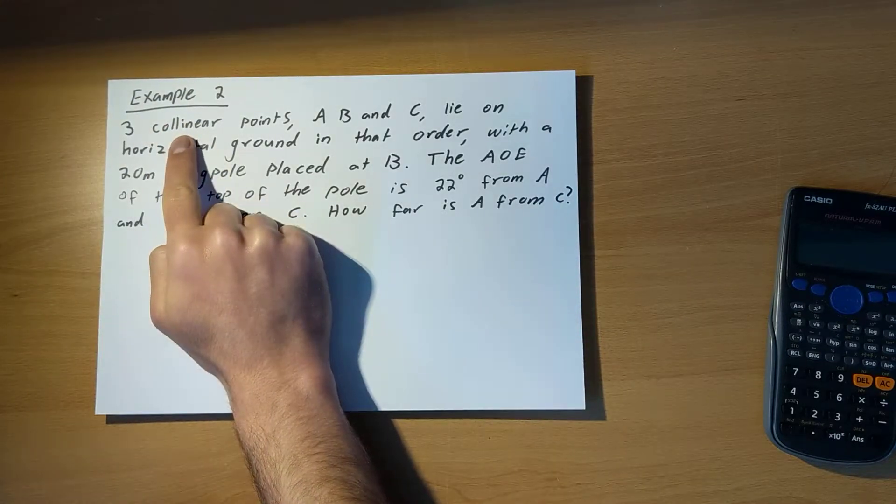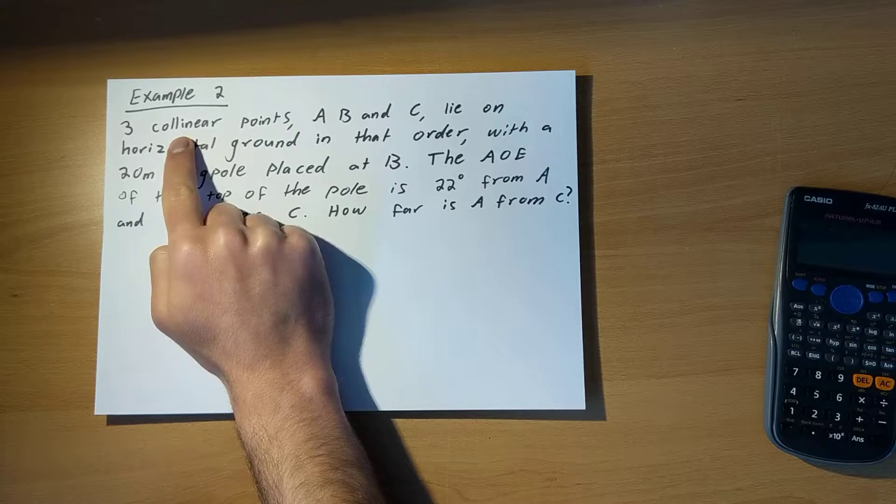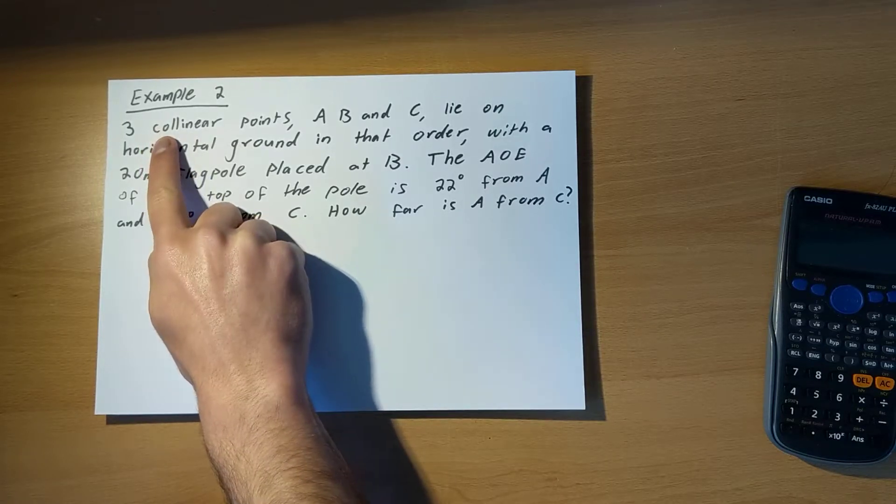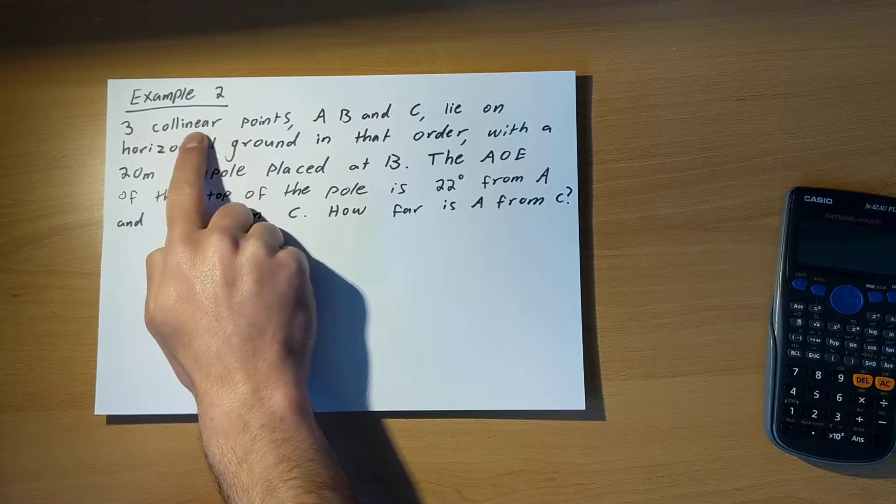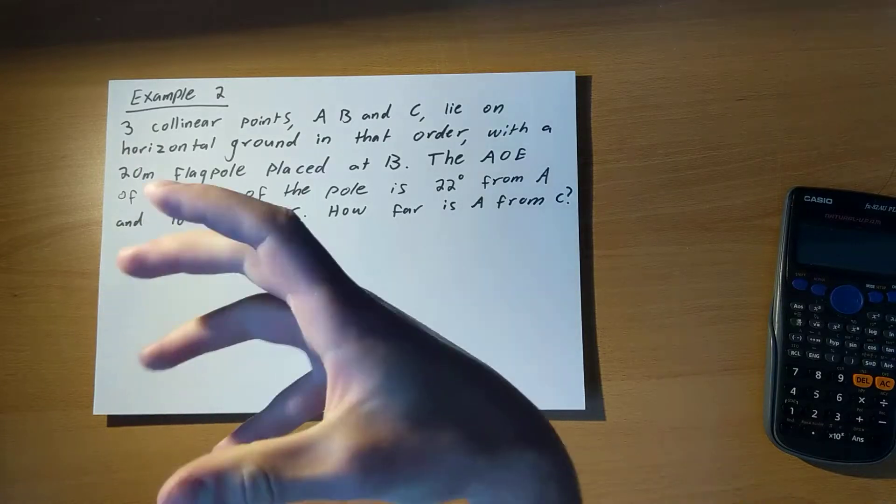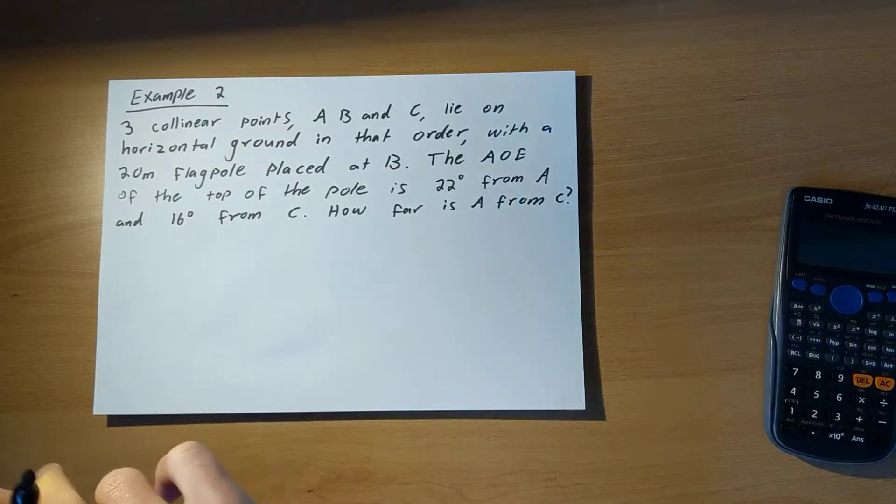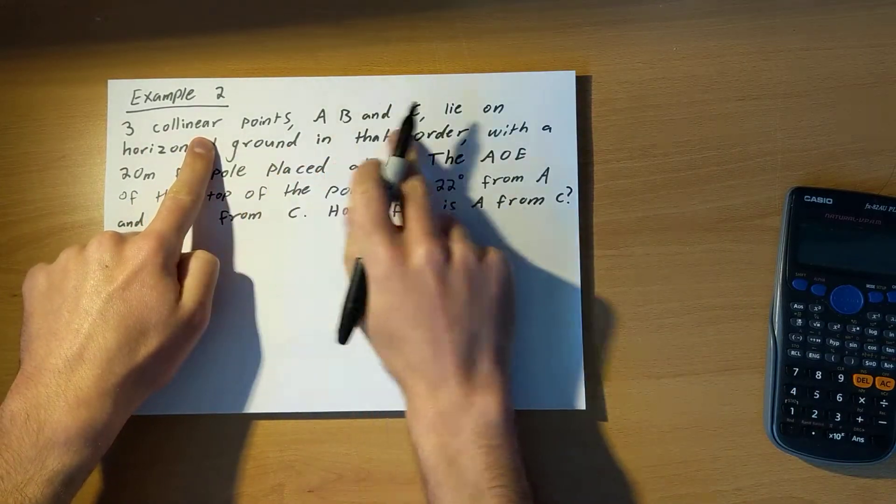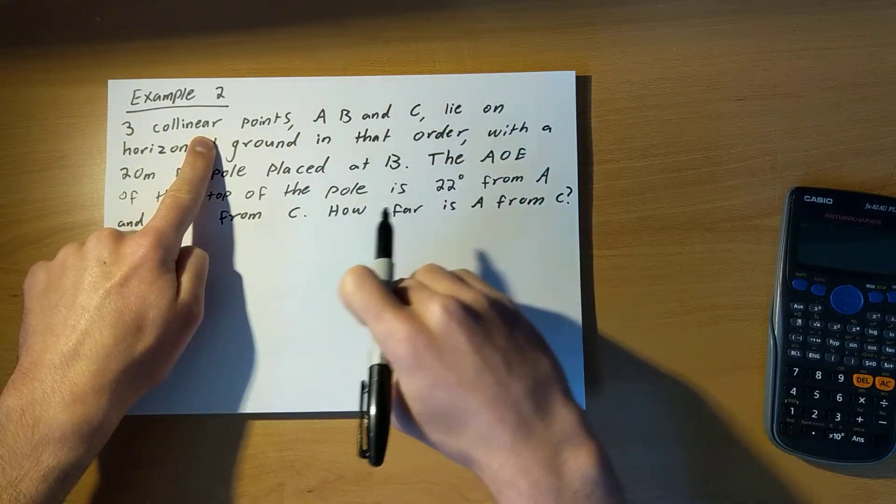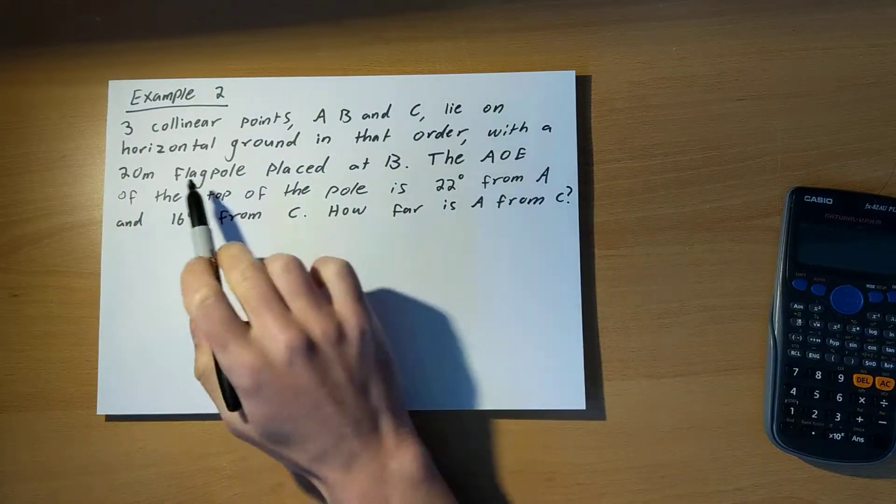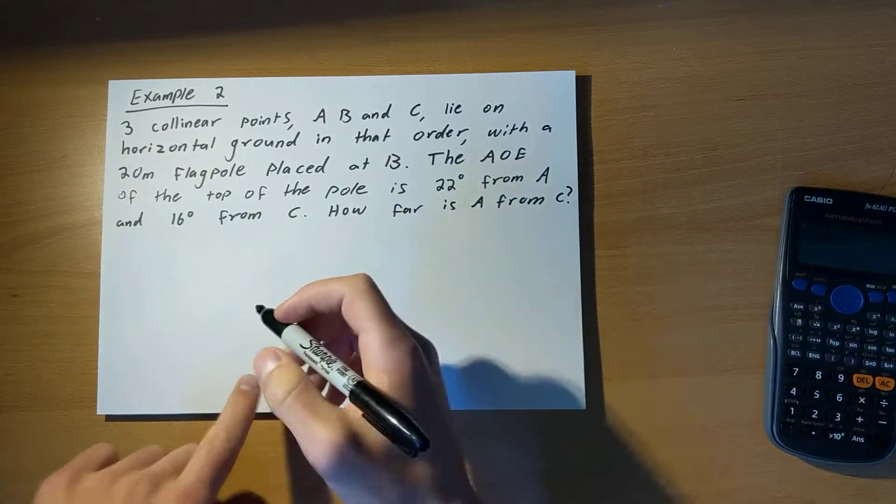First of all, this word, collinear, you'll see it a few times in this unit. And it means what it sounds like it means. Co-linear. Linear meaning in a line and co- meaning together or co- like the prefix to all the other words you know that start with co. So collinear means that all these three points lie together in the one line. Collinear, same line. So three collinear points, A, B, and C.